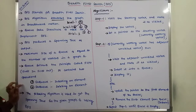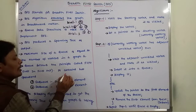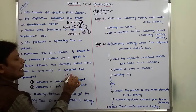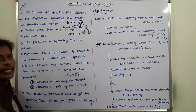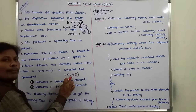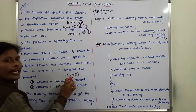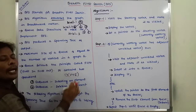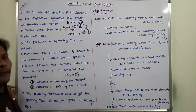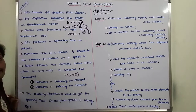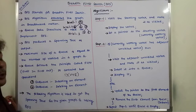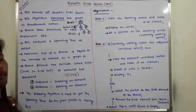The time complexity of the Breadth First Search technique is O(V + E), where V is the number of vertices in the given graph and E is the number of edges in the given graph. The Breadth First Search technique produces an optimal solution.